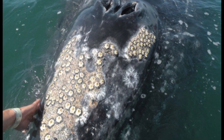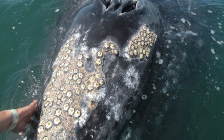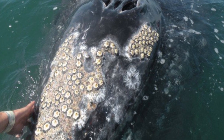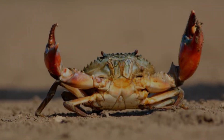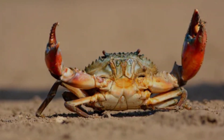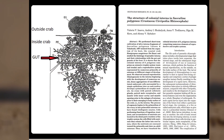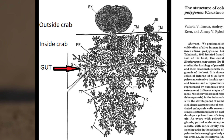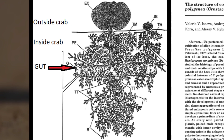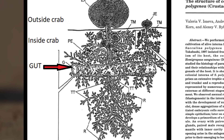Unlike most barnacles that cling harmlessly to rocks, boats, or even whales, barnacles from the genus Sacculina will penetrate through a crab's arm joint and proceed to grow root-like tendrils deep inside the crab's body. These root-like tendrils wrap around the organs, primarily the gut and blood vessels of the crab, where they will start to suck the nutrients from its new host.